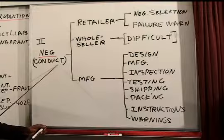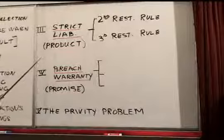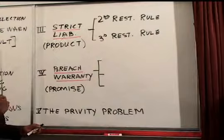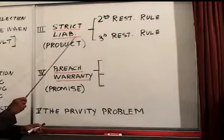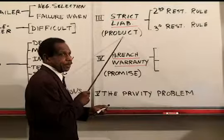The second theory of products liability is strict liability. In the case of strict liability, the key thing is that we're looking at the product — not the conduct of people. We're looking at the product itself, the car, the hammer, whatever it was, and the question is: is that product defective?